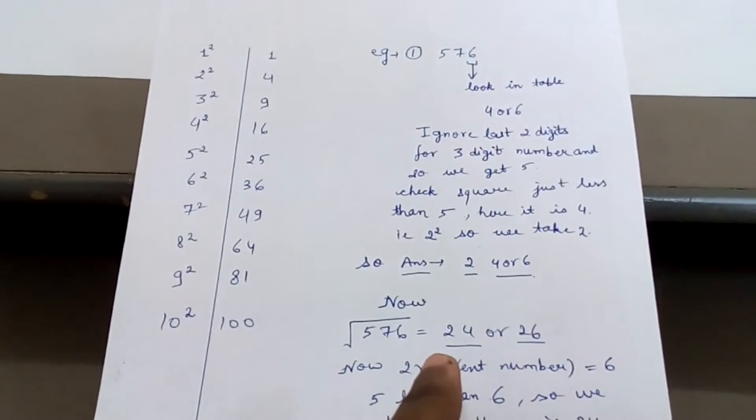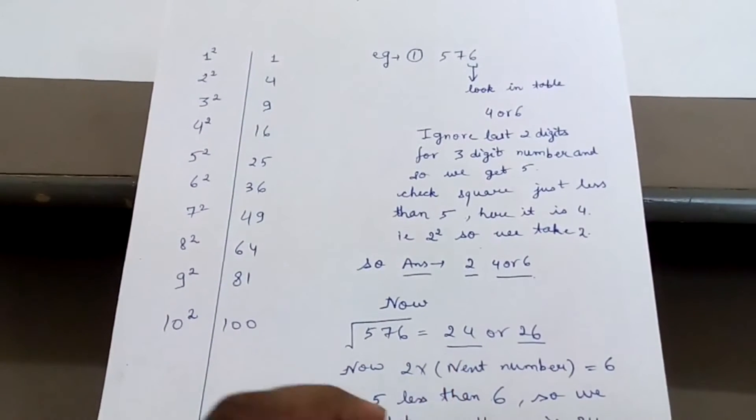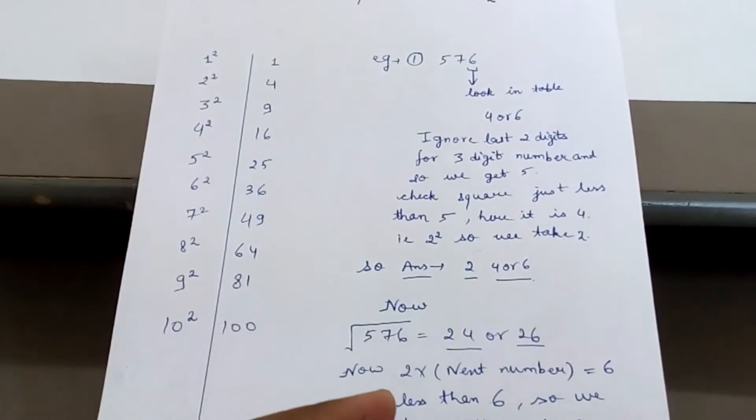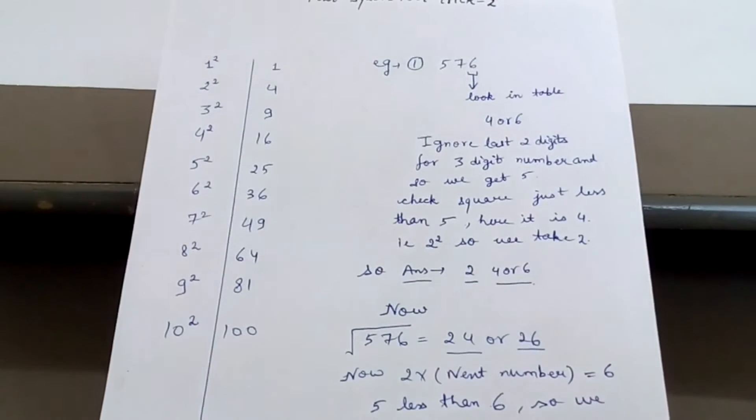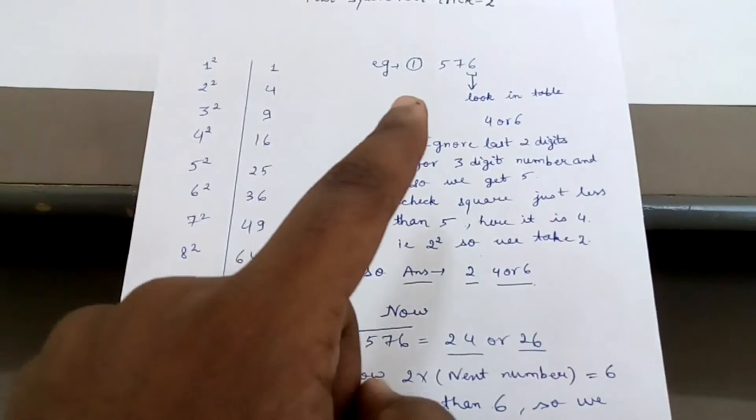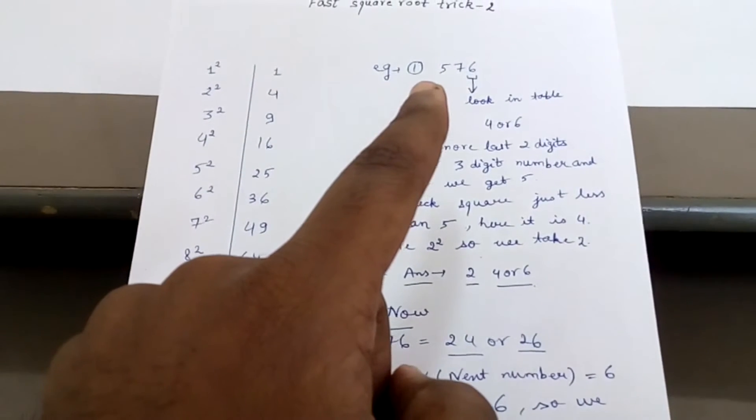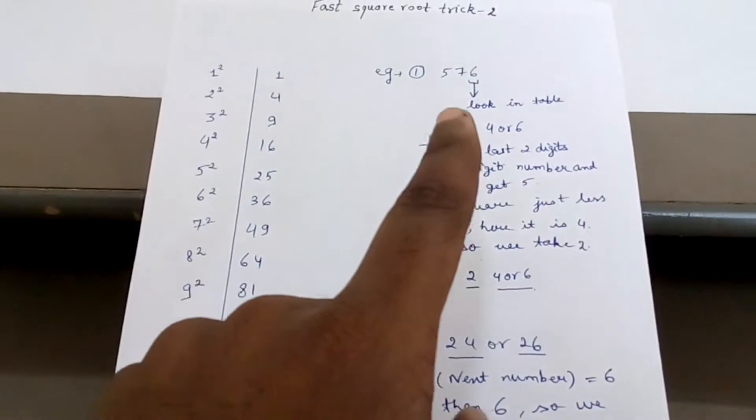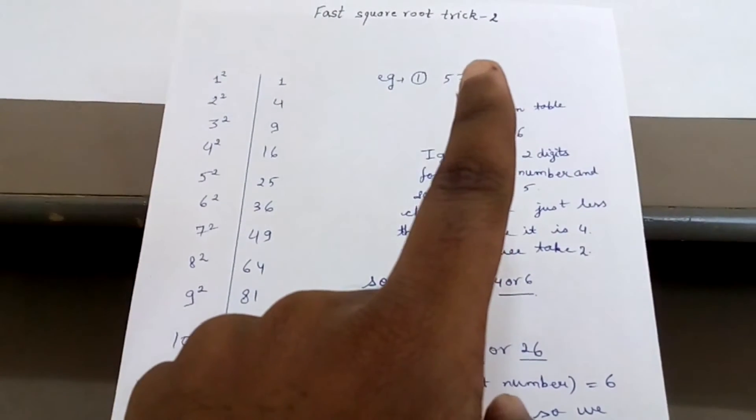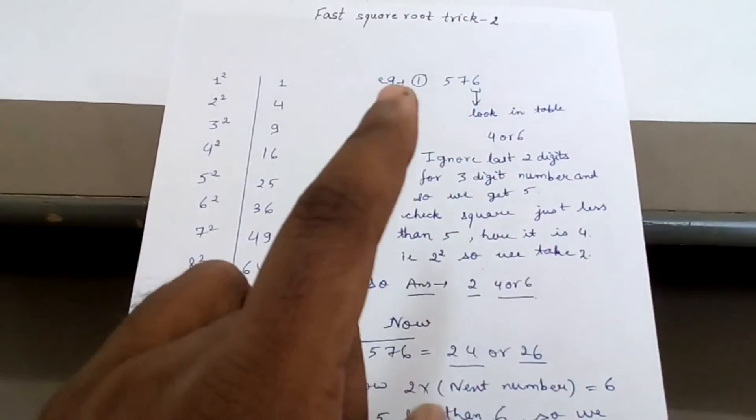Initially in the question 576, you eliminate 2 digits, you get 5. So 5 is less than 6, so here we will take a smaller of 24 and 26, that is 24.